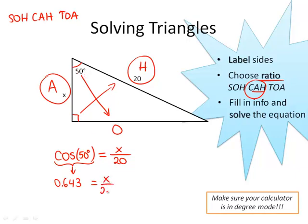This is the proportion that works for this ratio for 50 degree triangles, and we know that should equal x over 20. Now we want to solve the equation. Let's get x by itself. We could multiply both sides by 20, and we get 12.855. Let's just round to one decimal place, so 12.9 would be our x length.